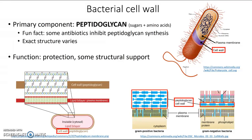The exact structure and the way the peptidoglycan is layered depends on the type of bacteria. In terms of function, the bacterial cell wall mostly provides protection and a little bit of structural support. That peptidoglycan is less rigid than cellulose or chitin, so it doesn't really provide a whole lot of structure — if we think of the plasma membrane as a bag around the cell, then the bacterial cell wall is a lot like just another layer of bag around all of that. So that's everything you need to know about cell walls — until next time, take care of yourself and take care of each other.